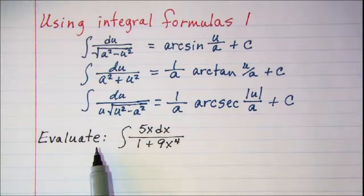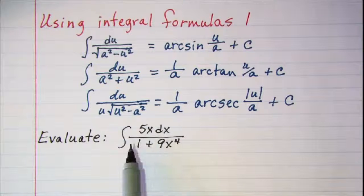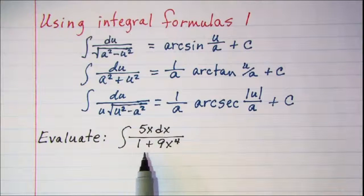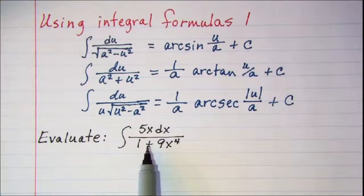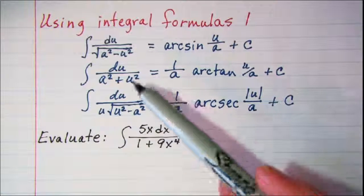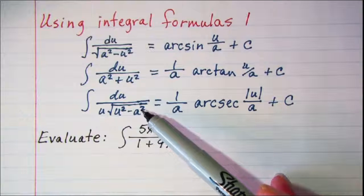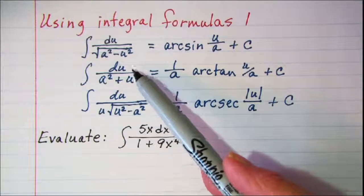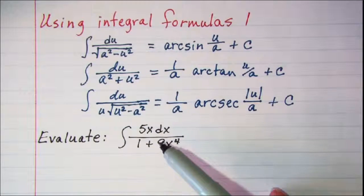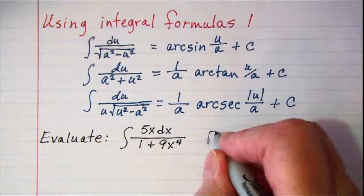The problem that we'll be doing is to evaluate the integral of 5xdx divided by 1 plus 9x to the fourth power. Now we want to first decide which of our formulas we want to use, and since the first and the third both require that there's a radical involved, I'm going to see if I can rewrite my problem so that it's in this format.